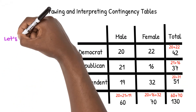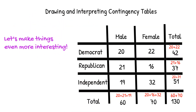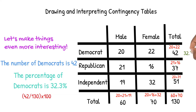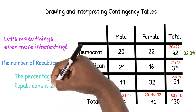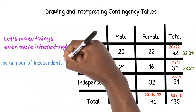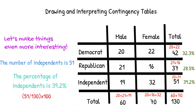Let's make things even more interesting by looking at something called Marginal Distribution. We can learn more about each category by focusing on our margin where totals are located and figuring out the percent of each value in the margin of the whole. We can see from the margin on the right that the total number of Democrats is 42. By putting 42 over a total of 130, then multiplying by 100 to convert to a percent, we see that 32.3% of those surveyed are Democrat. We can do the same for Republicans and find that 28.5% are Republican, and finally 39.2% were Independent.